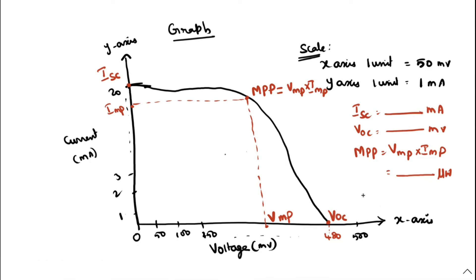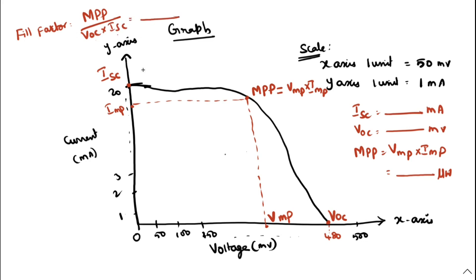The next parameter is the fill factor. The formula for fill factor is: Fill Factor = MPP divided by (VOC multiplied by ISC). This gives us the fill factor value.